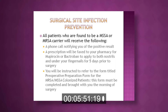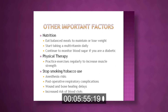You will be instructed to complete the preoperative preparation form for MRSA/MSSA colonized patients and bring it with you the morning of surgery. Regarding nutrition, please eat balanced meals to maintain or lose weight, start taking a multivitamin daily, and continue to monitor blood sugar if you are diabetic. Practice exercising regularly to increase muscle strength. Stop smoking, as it can affect anesthesia risks, cause postoperative respiratory complications, wound and bone healing delays, and increased risk of blood clots.